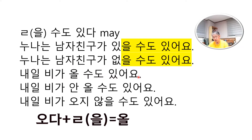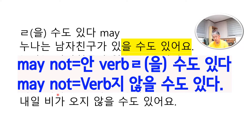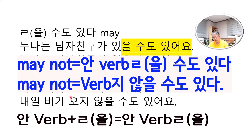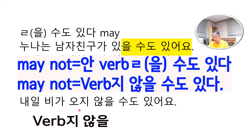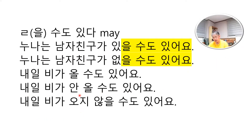내일 비가 올 수도 있어요 — 오다 combined with 을 수도 있다 gives 올 수도 있어요, meaning 'it may rain tomorrow.' For 'may not,' you can say 안 올 수도 있어요, putting 안 always before the verb. 내일 비가 안 올 수도 있어요 — it may not rain tomorrow. Alternatively, 내일 비가 오지 않을 수도 있어요 — 오다 combined with 지 않다 — it may not rain tomorrow.